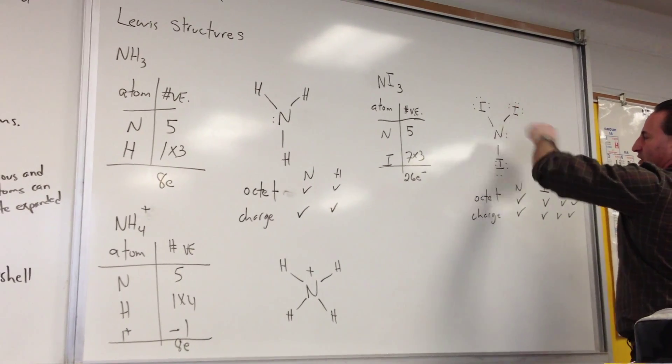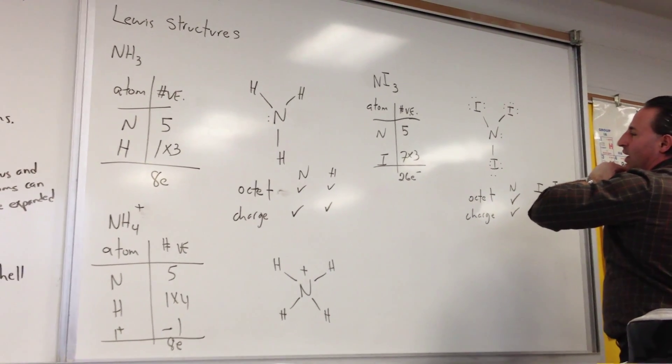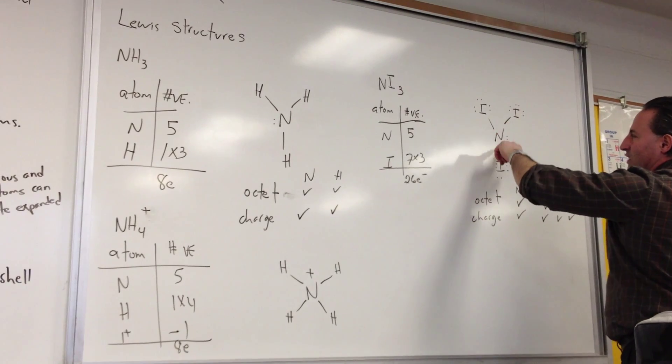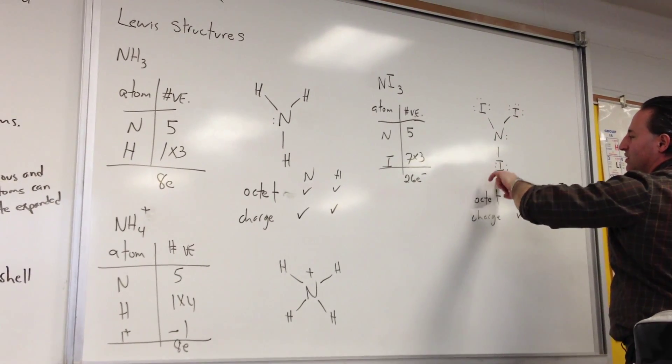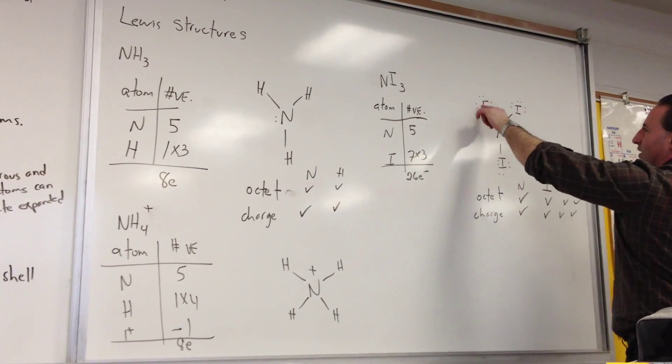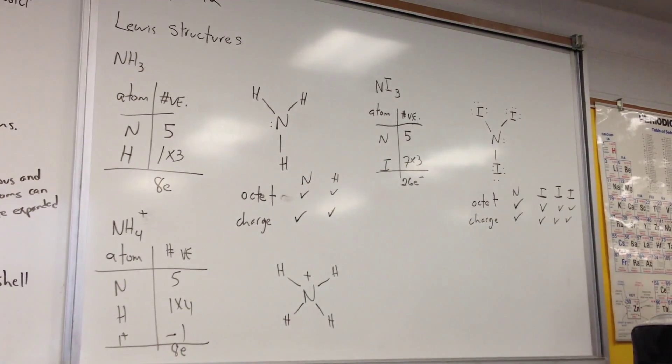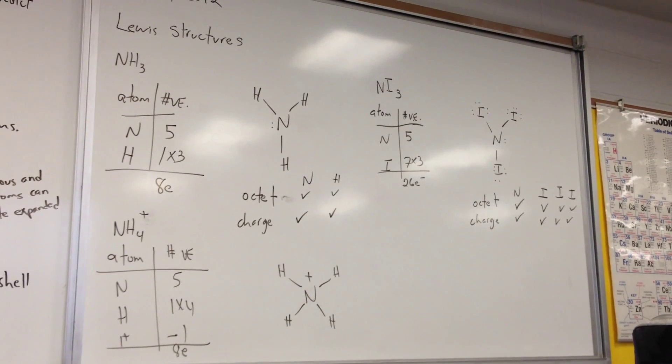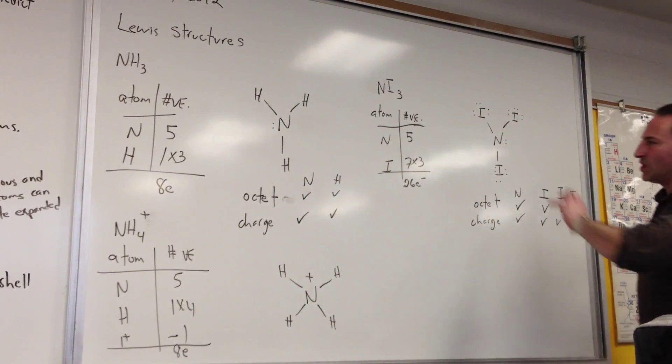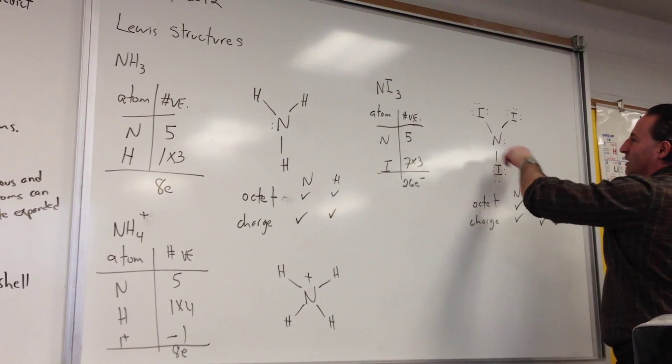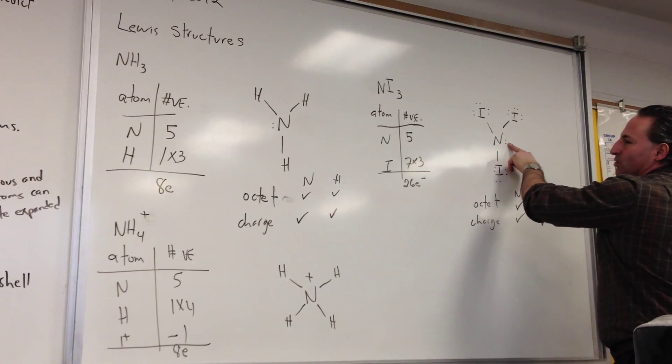In this case, we put the 3 bonds going to the iodine atoms. That only uses up 6 electrons. So what we do is we put 6 electrons around each iodine atom, because we realize that iodine likes to have 7 valence electrons. And then once we've done that, it uses up 24 electrons. The last 2 we've placed on the central atom.